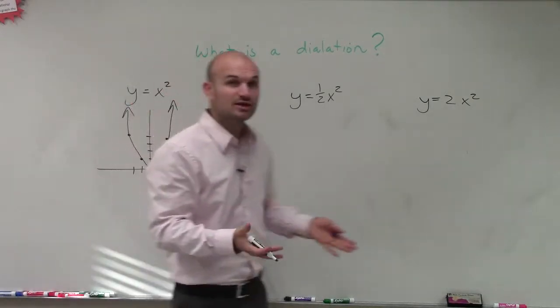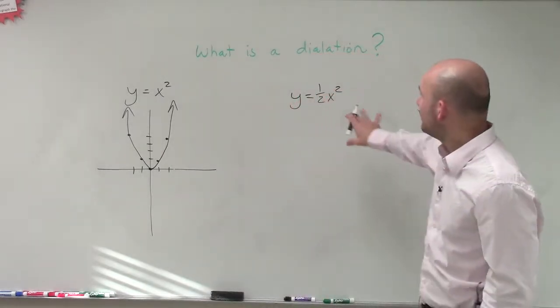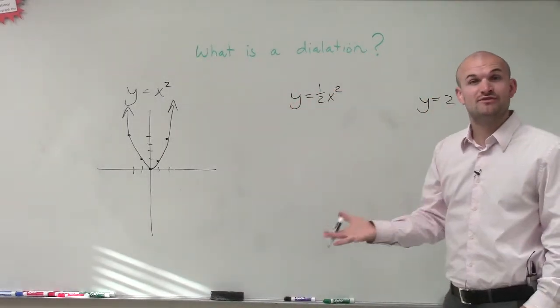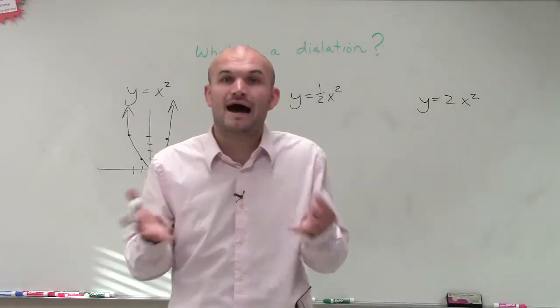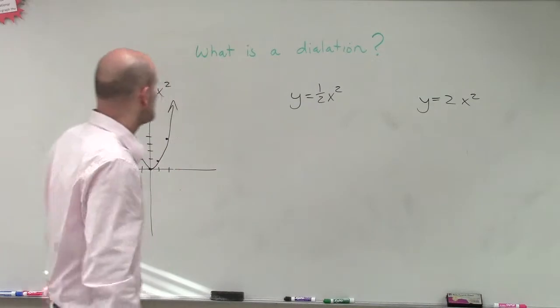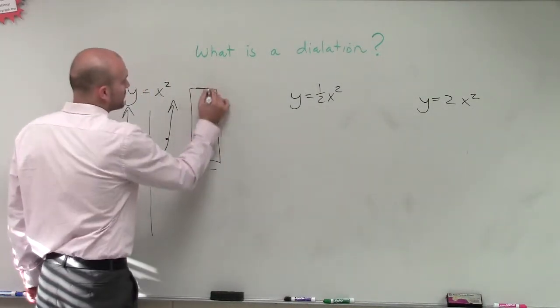So what we're going to be looking at when we're talking about what is a dilation, we're going to be looking at how is this 1 half and how is this 2 going to affect it? Because we're not going to be talking about a slope like we would with a linear. We want to see how is this graph being affected. So we can create a table of values. And I'll just actually quickly go through these table values here for you.